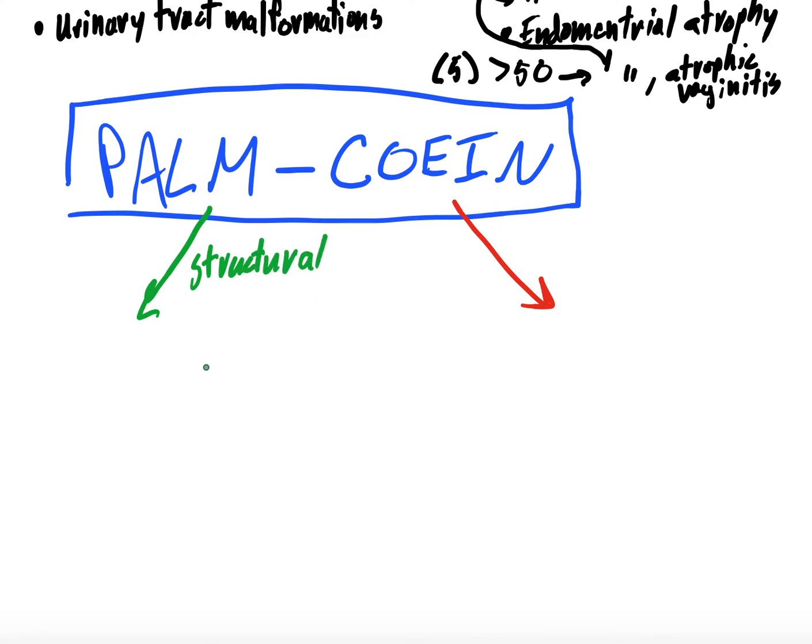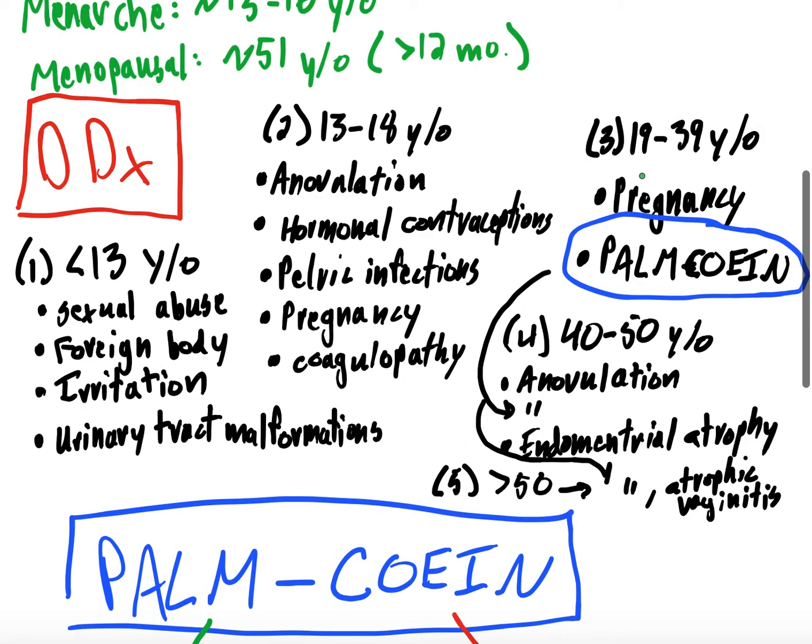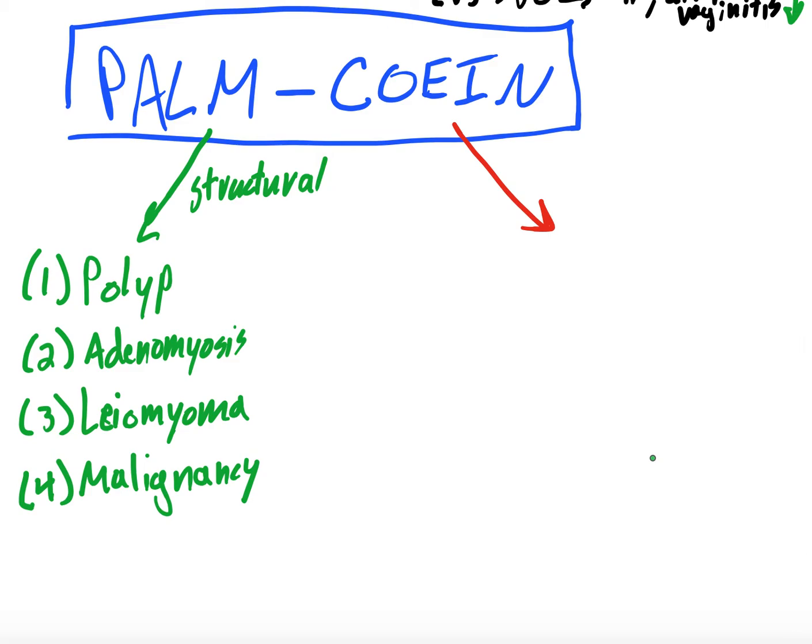Structural. And it stands for P for polyp, right? A for adenomyosis, L for leiomyoma, also known as fibroids, and then M for malignancy. Right? And remember, if we scroll up, palm, Cohen started for our 39, or 19 to 39 year olds, and then fell all the way through to greater than 50. So think about structural causes, cervical polyps, adenomyosis, leiomyoma, malignancy.